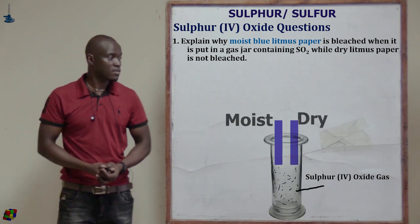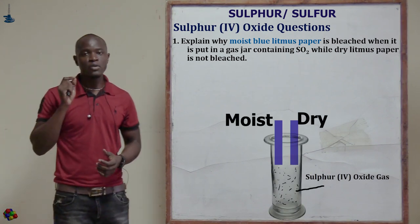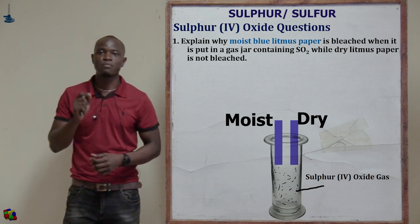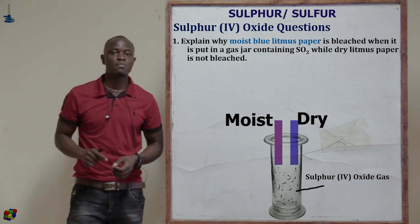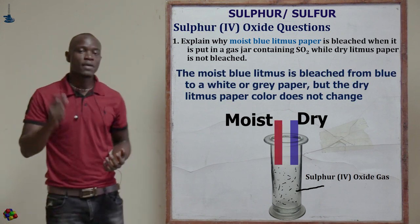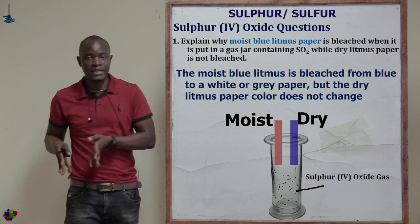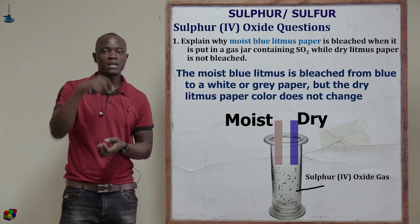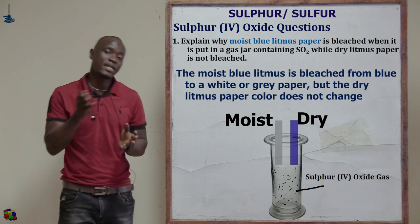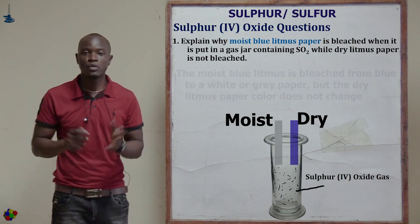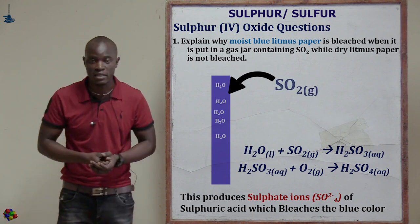Let's look at questions. The first question is asking: explain why moist blue litmus paper is bleached when it is put in a gas jar containing sulfur 4 oxide, while dry litmus paper is not bleached. So why is it that a moist blue litmus paper will be bleached immediately when placed in a gas jar full of sulfur 4 oxide, while dry litmus paper will not show any effect?